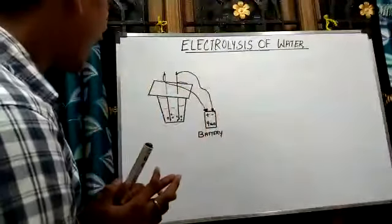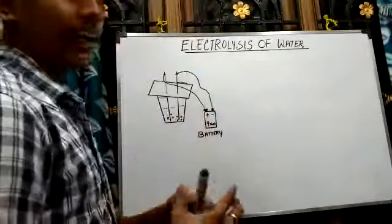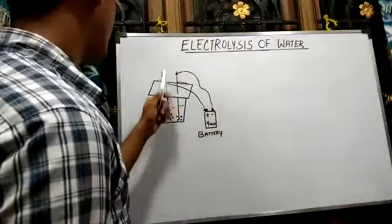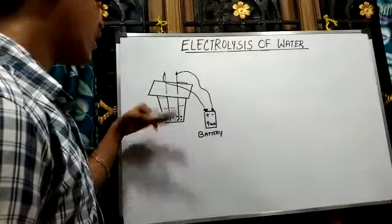Now if you observe this diagram, this is the 9-volt battery. These are the connecting wires, where these two pencils are kept inside the beaker containing water.